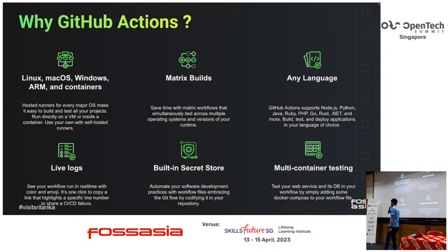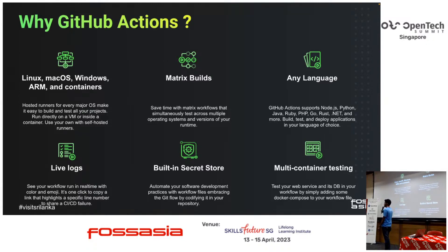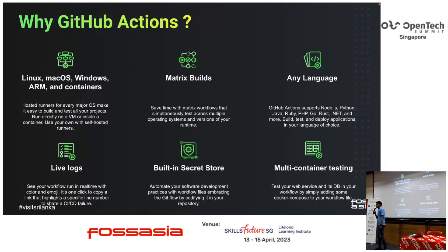Why do we need to use GitHub Actions? The first point is it supports multiple operating systems — Linux, Windows, Mac, and containers. If you are coming from a Docker background, you don't need to go with a VM; you can simply run your CI/CD stuff in containers. It also supports matrix builds, meaning if you want to test your application on multiple operating systems such as Linux and Windows in parallel, GitHub Actions allows you to do that, saving you more time. And it supports any language — so far it supports most programming languages such as JavaScript, Go, Ruby, and more.